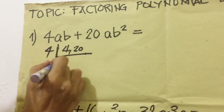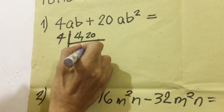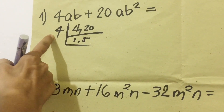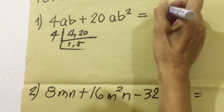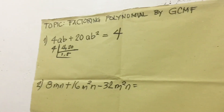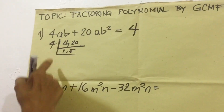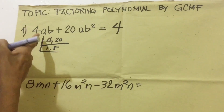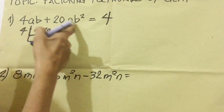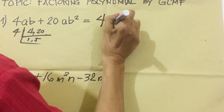4 divided by 4 is 1; 20 divided by 4 is 5. There is no more common factor, so 4 is our greatest common factor. Next, we look at the variable or literal coefficient. For the variable, we take the lowest exponent. We have 'a' and 'a' — both terms have 'a', so we can include it as a factor.